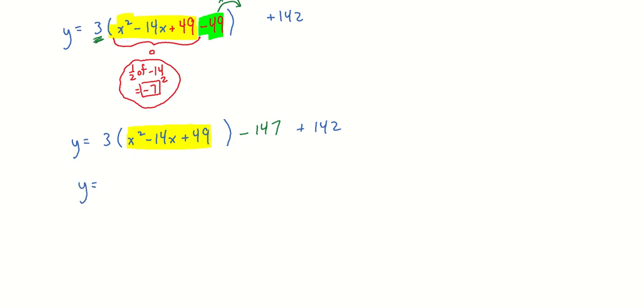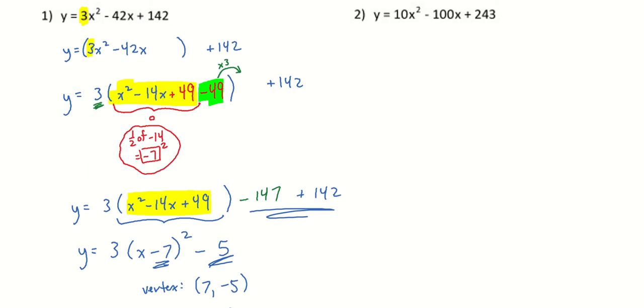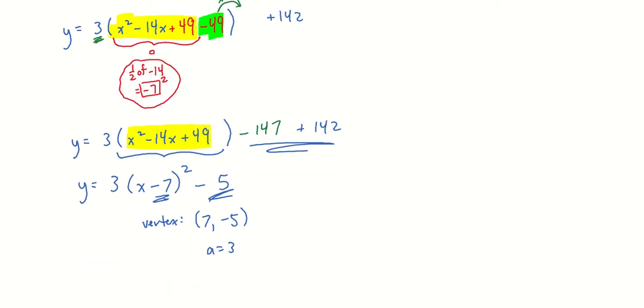So, y is equal to 3. This is a perfect square trinomial. It's x minus 7 squared. And then we're going to take the last couple of terms there, negative 147 and positive 142, add up to minus 5. So there's our vertex form of this particular parabola. Remember, our vertex is what's being subtracted inside there. So, 7 and it's what's being added at the end. So, that's negative 5. And a is 3, just like it was in the original equation. All right, so let's take a look at some more.